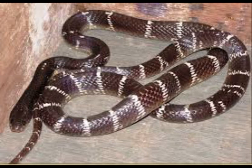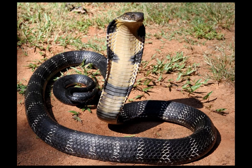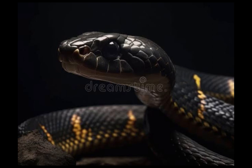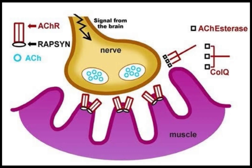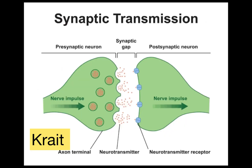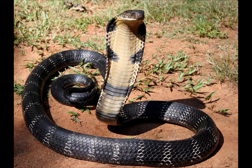Cobra and krait both inject neurotoxic venoms. King cobra is the largest venomous snake, and black mamba is one of the most dangerous. Neurotoxic symptoms typically appear within 30 minutes to 6 hours for cobra bite and 6 to 24 hours for krait bite. Neurotoxins target the neuromuscular junction and affect presynaptically, postsynaptically, or both. Krait bite produces presynaptic neurotoxins causing paralysis that may take weeks to recover; cobra produces postsynaptic neurotoxins that can be fully reversed with ASV and neostigmine.